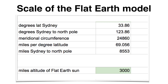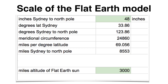I put a bunch of numbers into a spreadsheet, using each number to calculate others — like the miles per degree latitude, which is a calculated value. How big is the scale going to be? That's a personal choice. I wanted to be able to reach both the sun and the telescope in Sydney, so I picked 48 inches as the distance from Sydney to the North Pole.